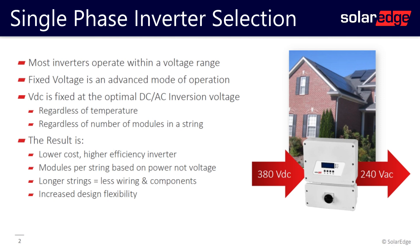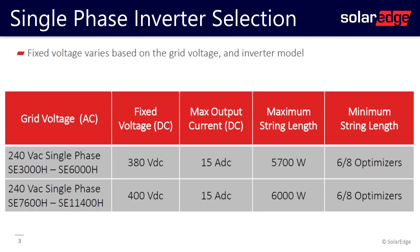What are those fixed string voltage values? For the SE3000H, SE3800H, SE5000H, and SE6000H, the fixed voltage is 380 volts DC, yielding a maximum string length of 5,700 watts. For the SE7600H, SE10000H, and SE11400H, the fixed voltage is 400 volts DC, yielding a maximum string length of 6,000 watts.